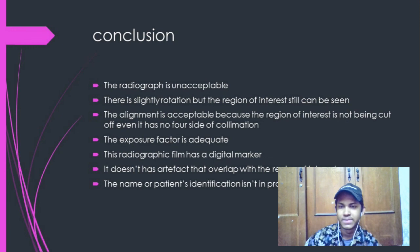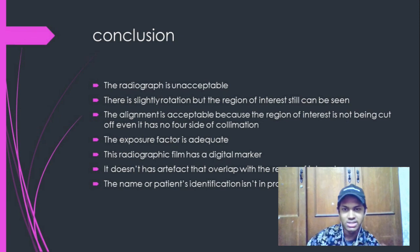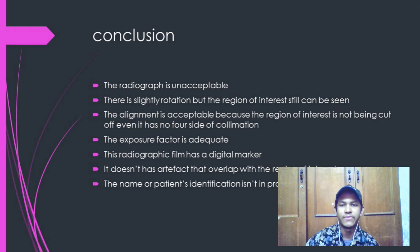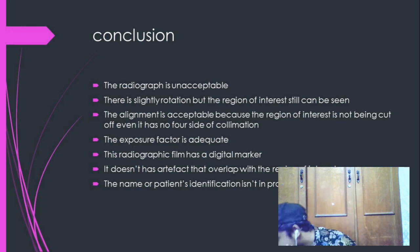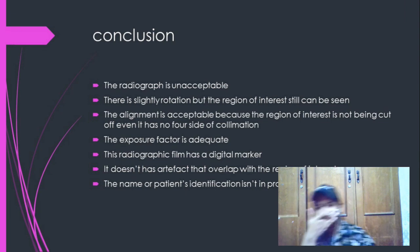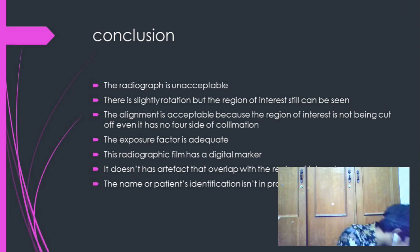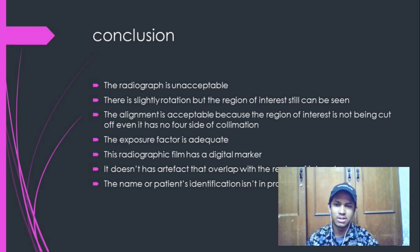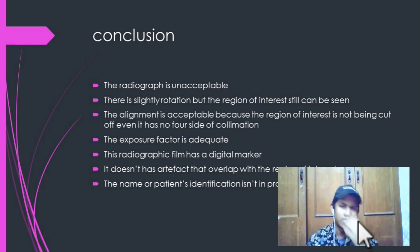In conclusion, the radiograph is unacceptable because there is slight rotation, but the region of interest can still be seen. The alignment is acceptable because the region of interest is not being cut off, even though there are no four sides of collimation. The exposure factors are adequate. The radiographic film has a digital marker and does not have artifacts overlapping with the region of interest, but the patient's name and identification are not present on the film.